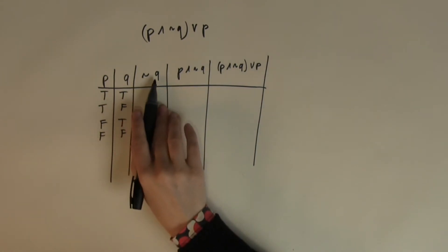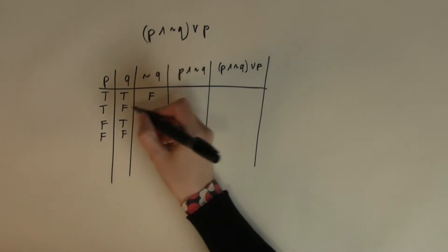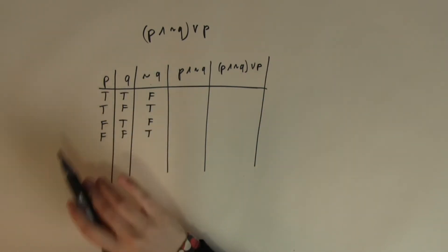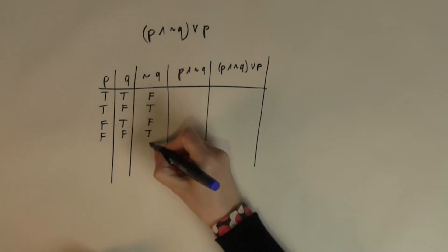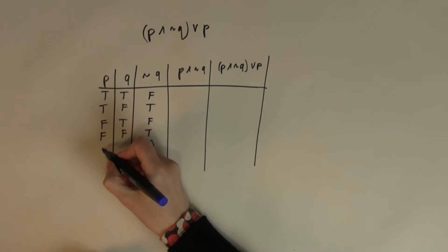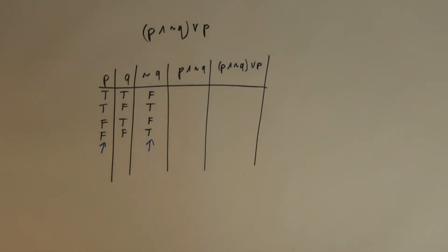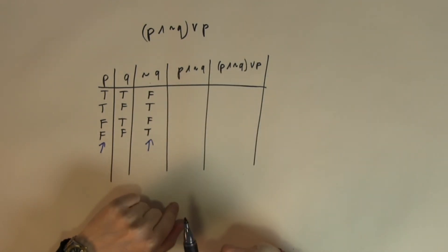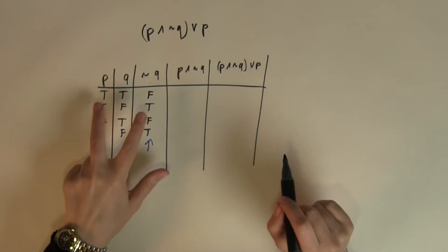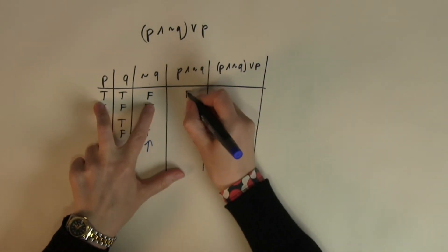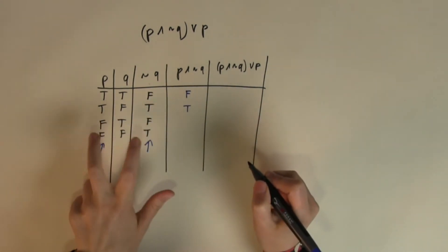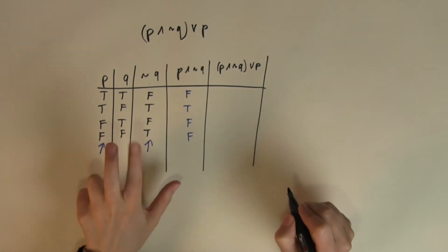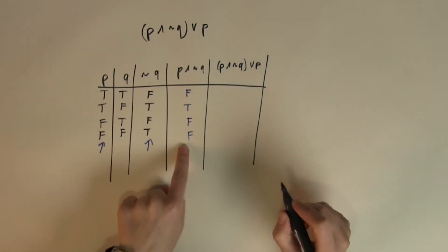What does NOT do to an input? True turns into false, and false turns into true. So applying NOT to q gives the NOT q column. Next, I pick up NOT q and combine it with p using the AND operation. True AND false = false; true AND true = true; false AND false = false; false AND true = false. So now I have the result of p AND NOT q for each of the four combinations.